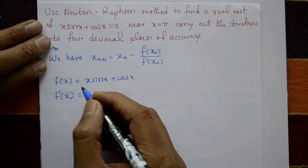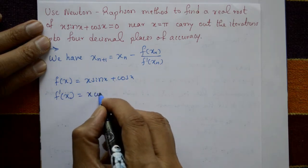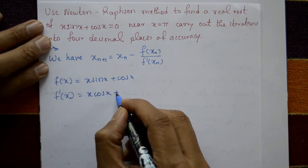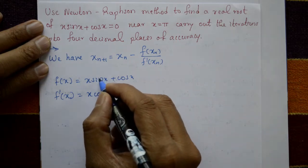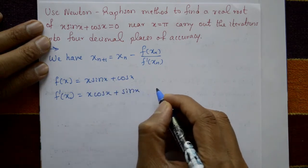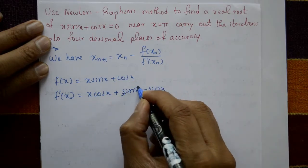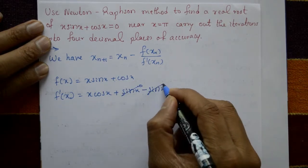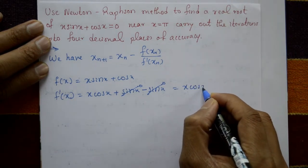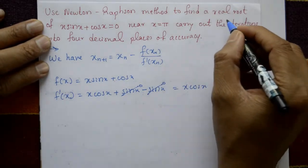Using the product rule, f'(x) = x·cos(x) + sin(x) as it is, minus sin(x) — the plus and minus cancel — so f'(x) = x·cos(x).